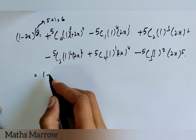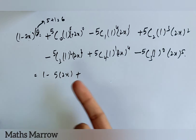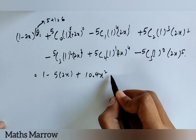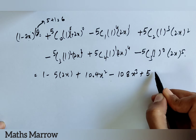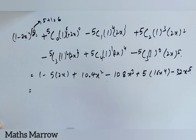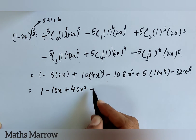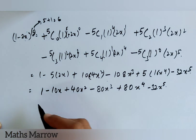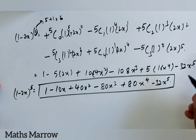Now the answer will come as: 1 minus 5 into 2x, plus 5C2 into 4x squared — that gives 10 into 4x squared — minus 5C3 into 8x cubed, plus 5C4 which is 5 into 16x to the power 4, then minus 32x to the power 5. So the final answer is: 1 minus 10x plus 40x squared minus 80x cubed plus 80x to the power 4 minus 32x to the power 5. This is the expansion of (1 - 2x)^5.